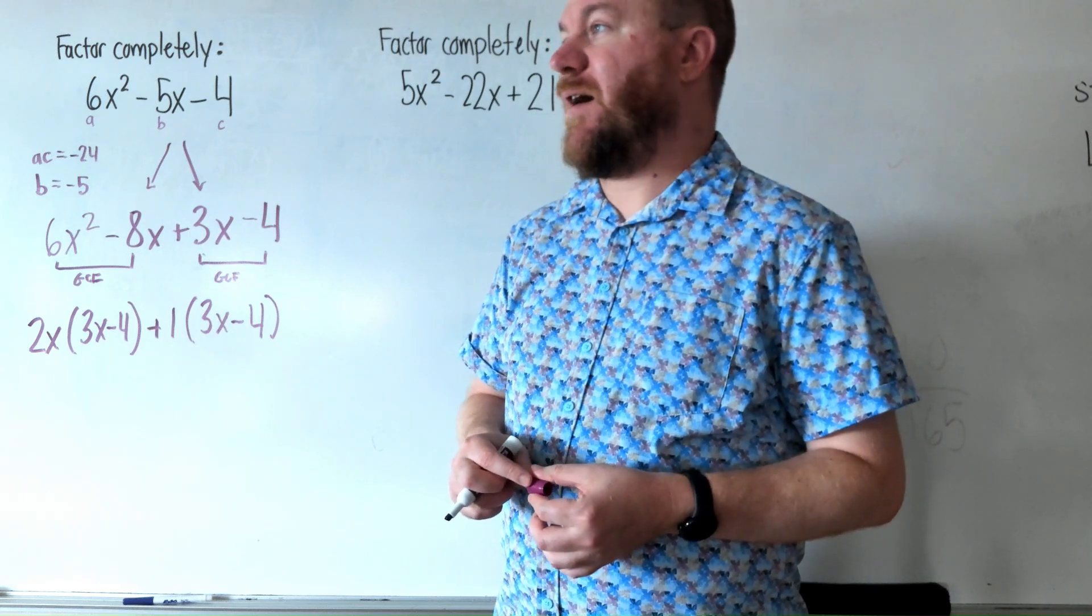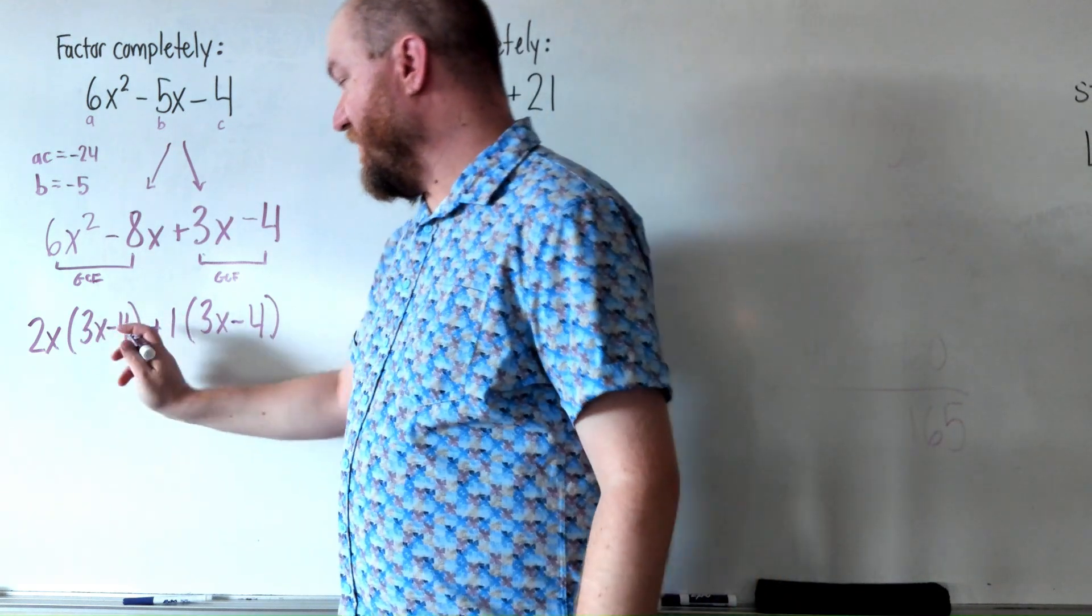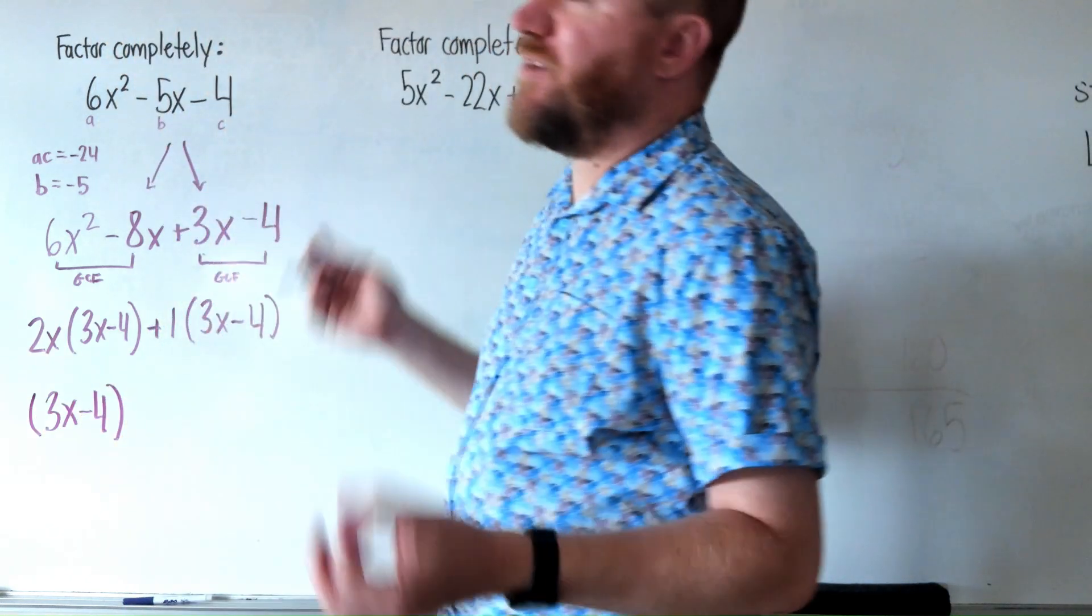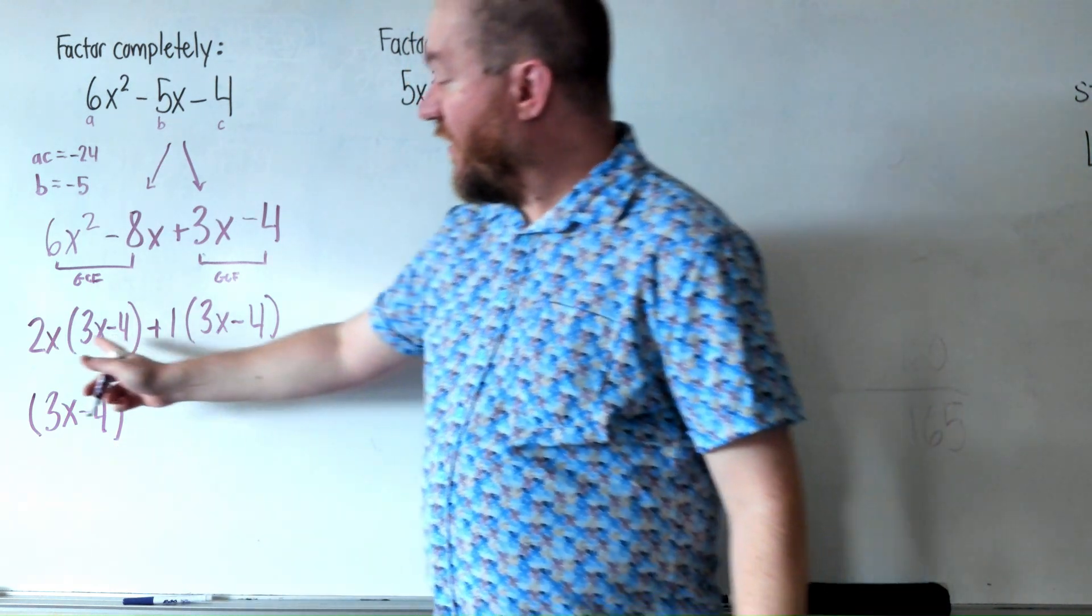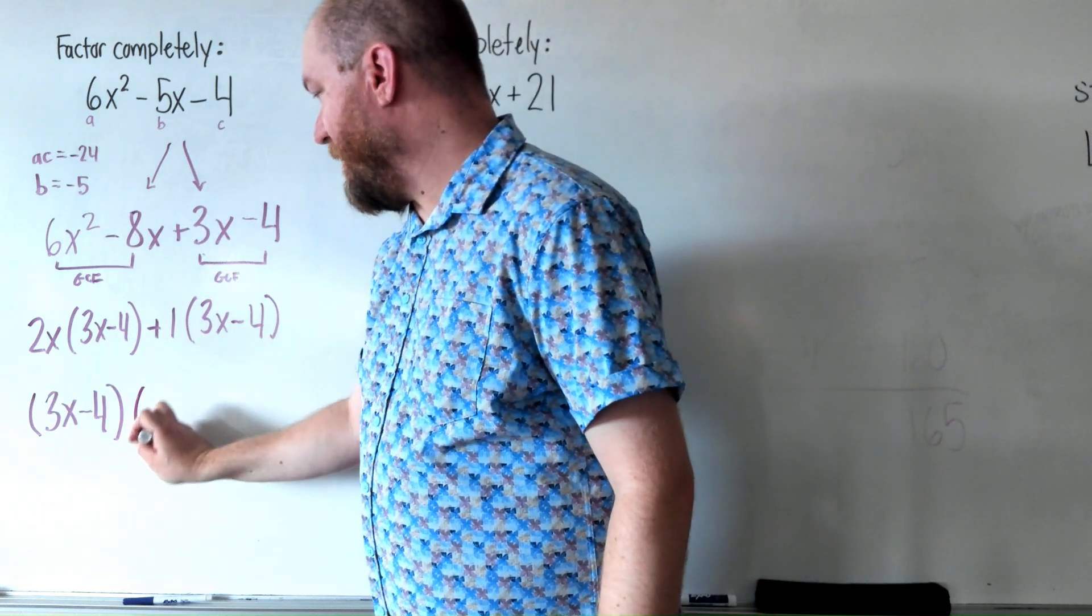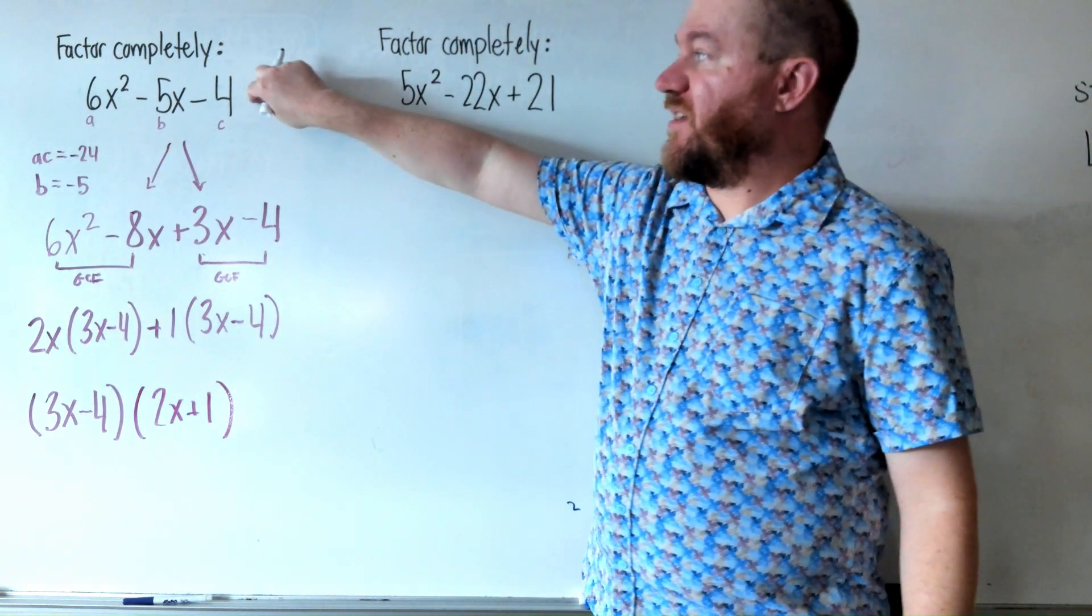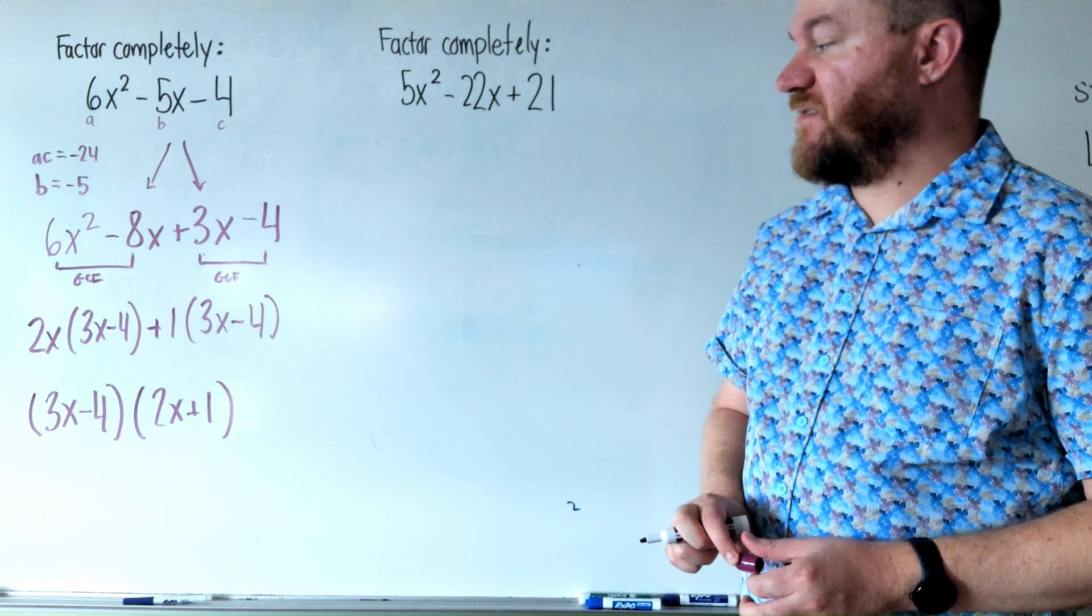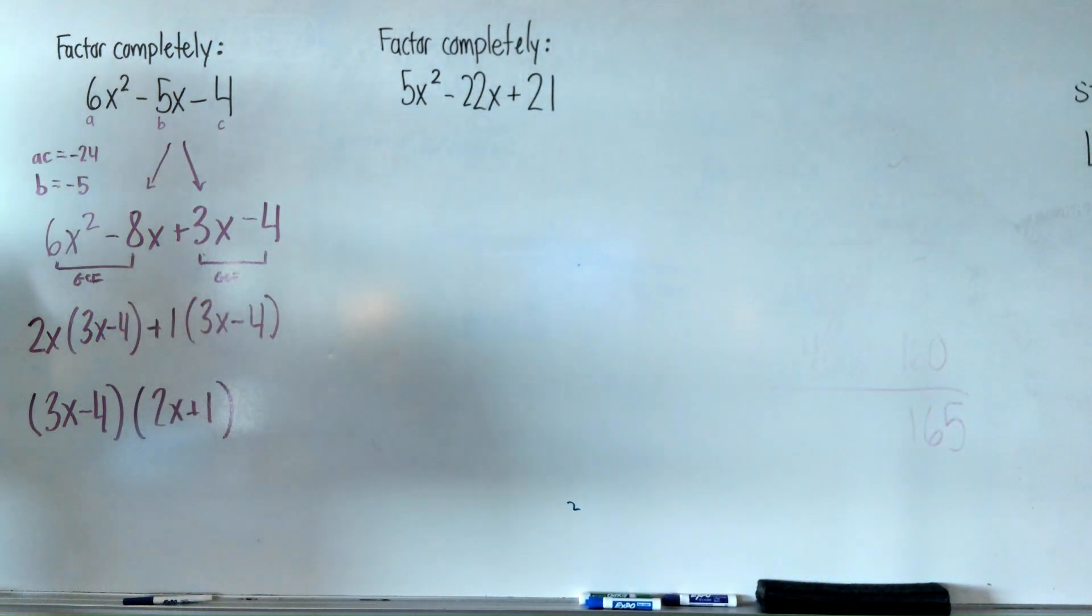Now, you'll notice that both of our parentheses are the same thing. That's on purpose. Now we're going to look at this whole statement, and we're going to GCF factor. Both of those have a 3x - 4, so we're going to factor that out. Now, the answer to these questions is always what was in the parentheses becomes one factor, and then the stuff in front of both parentheses, that becomes the other factor. So our answer to this question, 6x² - 5x - 4, factored completely, is (3x - 4) in parentheses, and (2x + 1) in parentheses. And if I wanted to check my work here, I would just use box method. I would multiply those using box method.